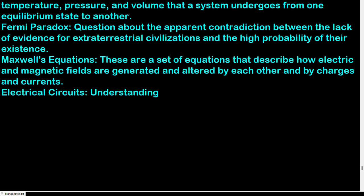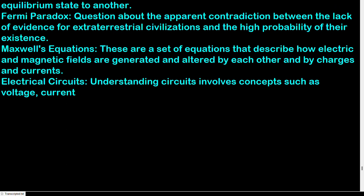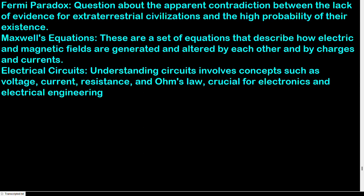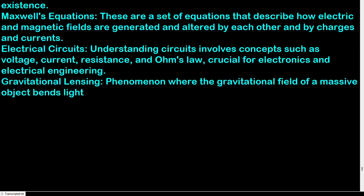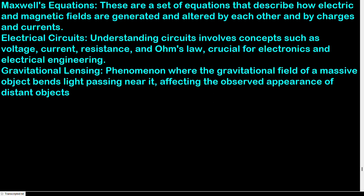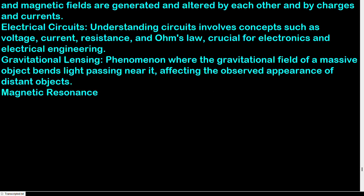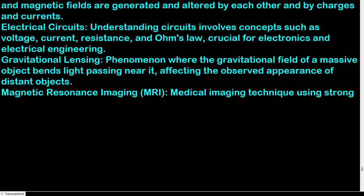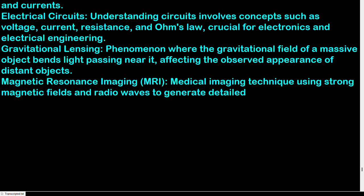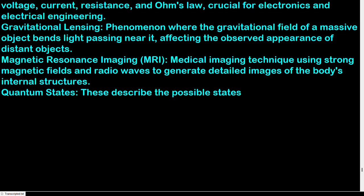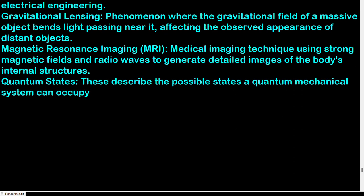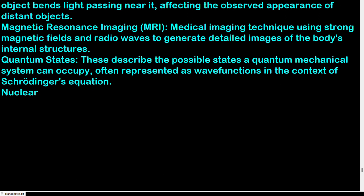Electrical circuits: understanding circuits involves concepts such as voltage, current, resistance, and Ohm's law, crucial for electronics and electrical engineering. Gravitational lensing: phenomenon where the gravitational field of a massive object bends light passing near it, affecting the observed appearance of distant objects. Magnetic resonance imaging (MRI): medical imaging technique using strong magnetic fields and radio waves to generate detailed images of the body's internal structures. Quantum states: describe the possible states a quantum mechanical system can occupy, often represented as wave functions in the context of Schrödinger's equation.